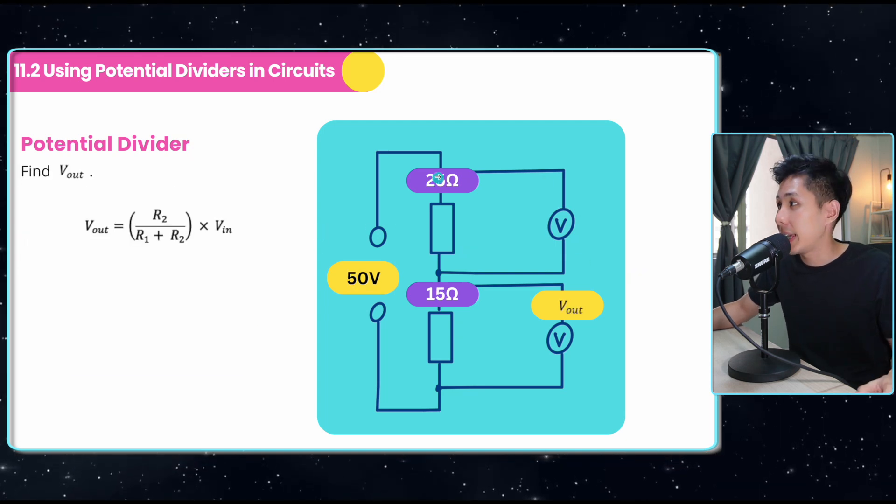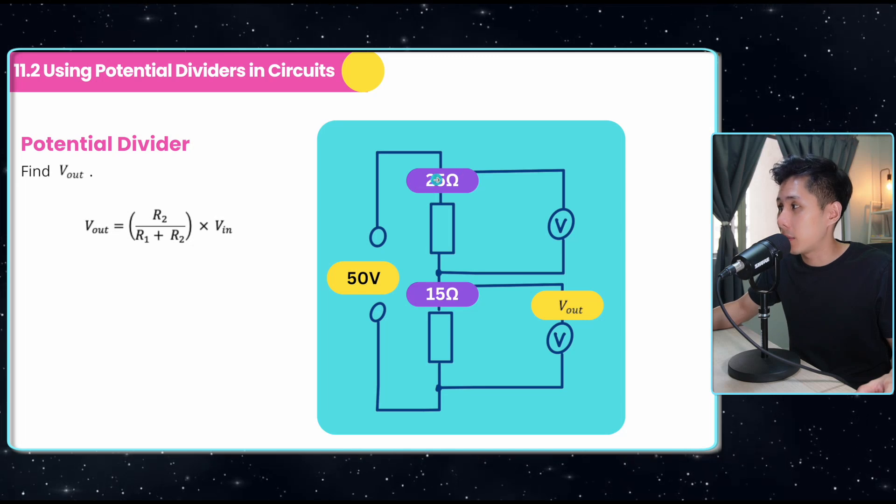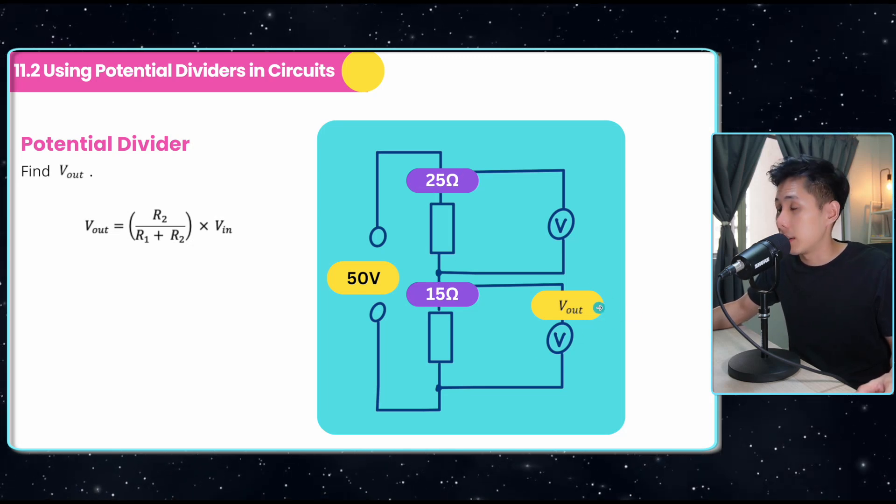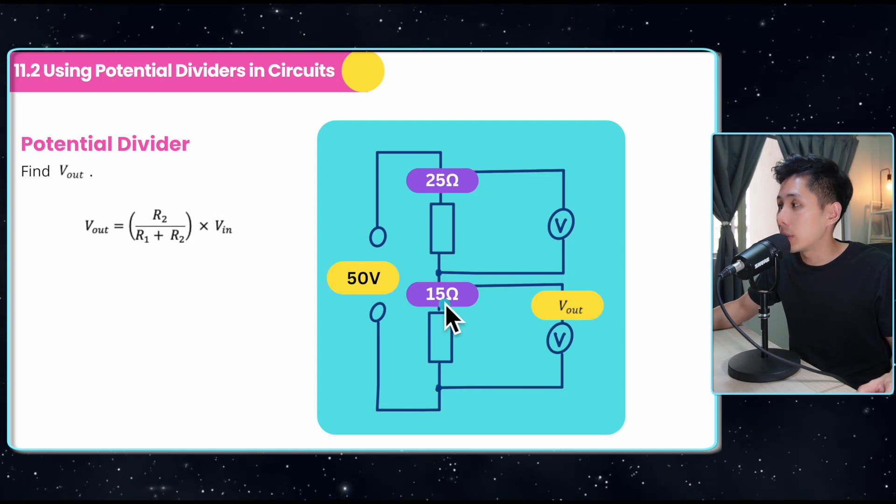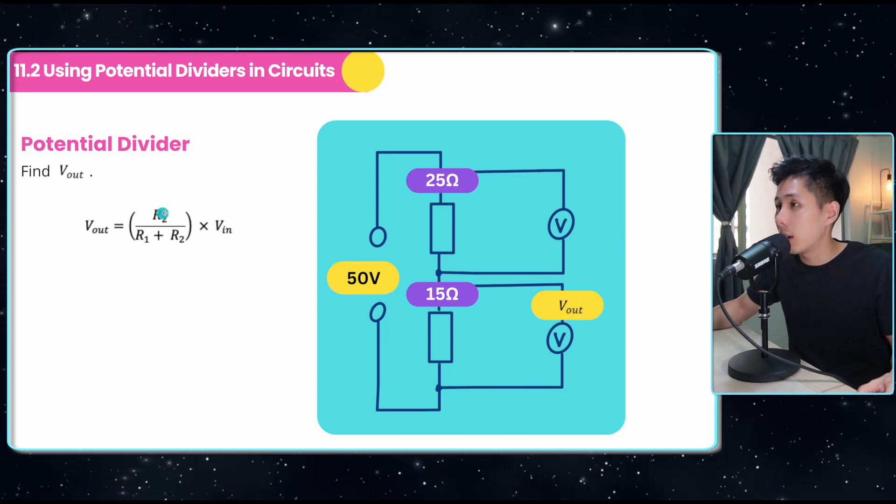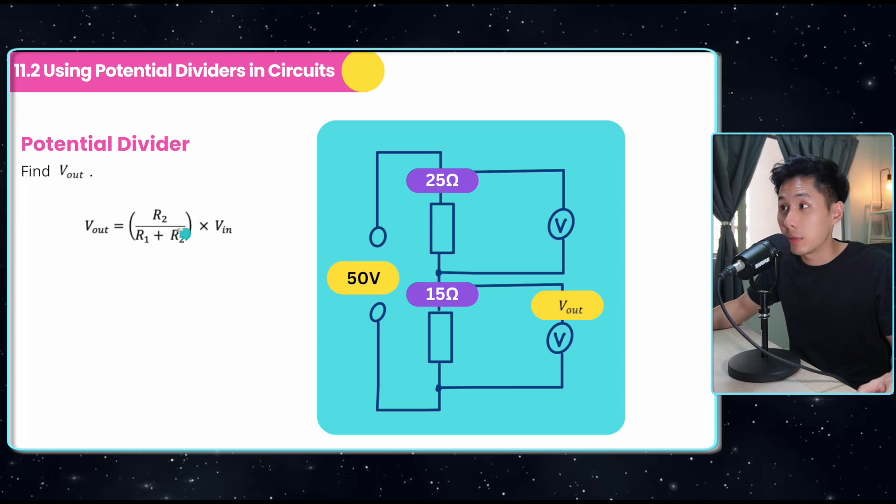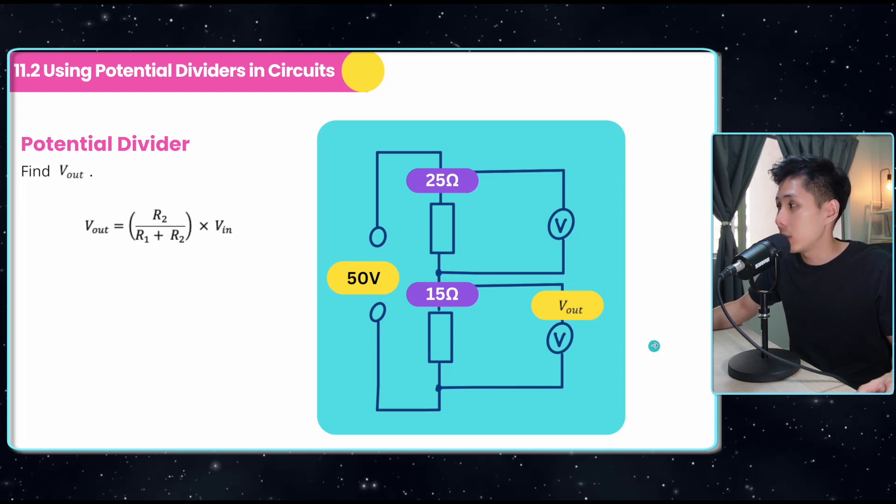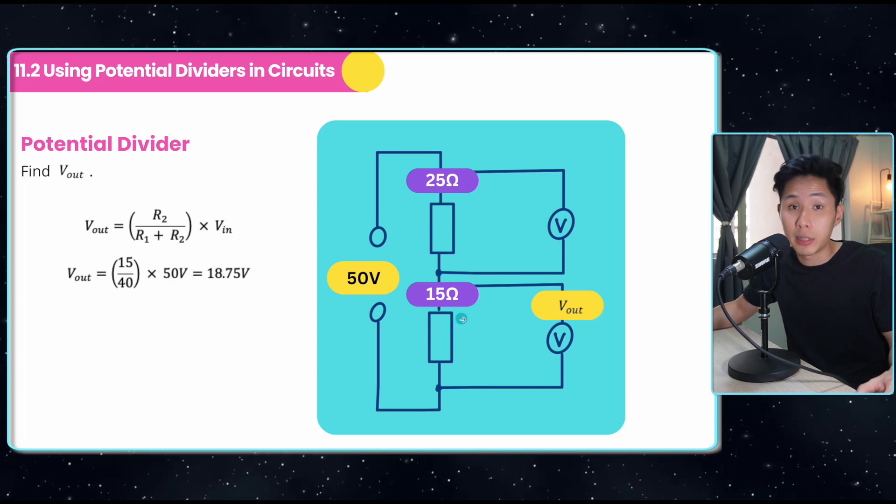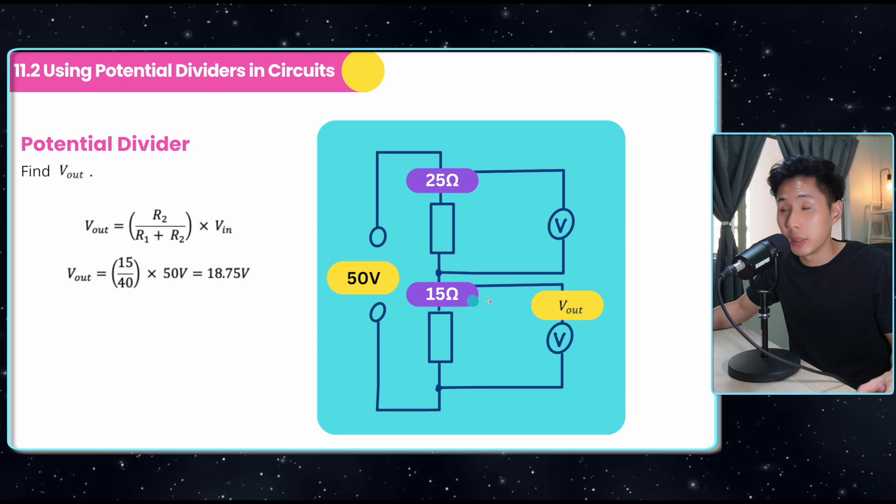Now let's solve another question. Say I have a resistor, 25 ohms here, 15 ohms here. What should be the output voltage here? Because I'm finding the output voltage of this 15-ohm resistor, I'll just put 15 on top divided by the sum of resistance multiplied by the input voltage. I would have gotten the output voltage of this resistor, which is pretty simple. That's how you can use the formula.